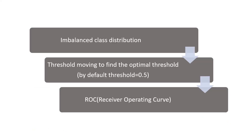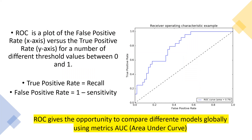If we have unbalanced class distributions — for example 500 samples where only 15 to 20 are positive and the remaining are negative — we have an unbalanced class distribution. By default we have a threshold of 0.5 for the logistic equation. The technique is to move our threshold to find the optimal one, and the solution is the Receiver Operating Curve. The ROC is a plot of the False Positive Rate on the x-axis versus the True Positive Rate on the y-axis for different threshold values between zero and one. The True Positive Rate is also known as recall.